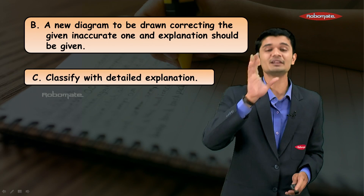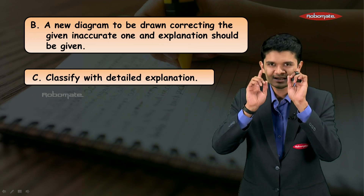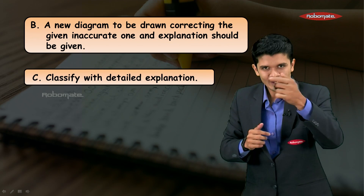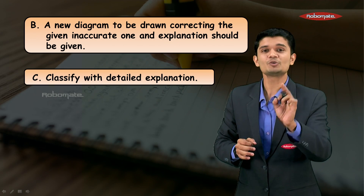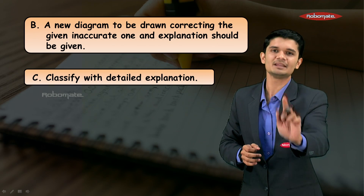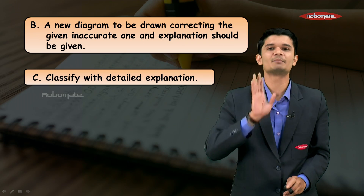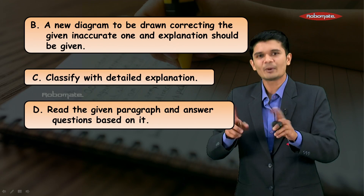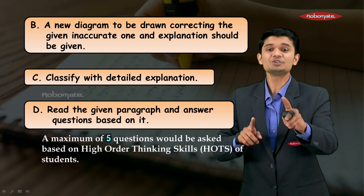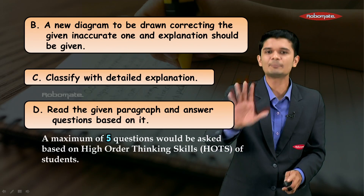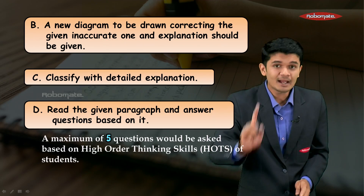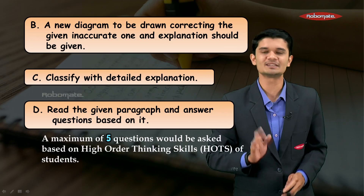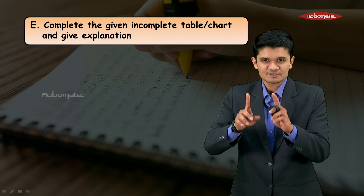You'll also come across classify things with a detailed explanation. Look at the component given, understand its parts, and give a detailed explanation. When writing the explanation in points, make sure to underline the important words with a pencil — it will help you get better marks. You'll also come across read the given paragraph and answer questions based on it. A maximum of five sub-questions would be asked, based on higher-order thinking skills.